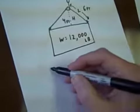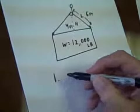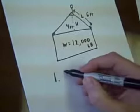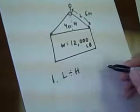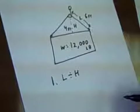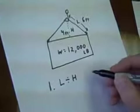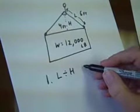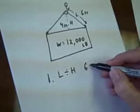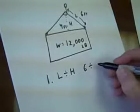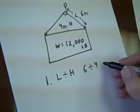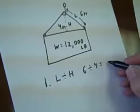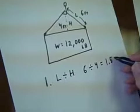So step number one was to take L, the length of the strap, divided by H, the height above the load that the hook is. So in this case we would have six divided by four, and that equals one point five.